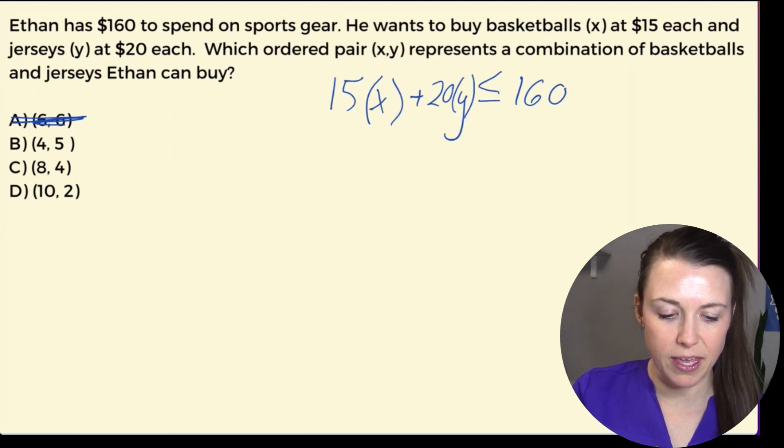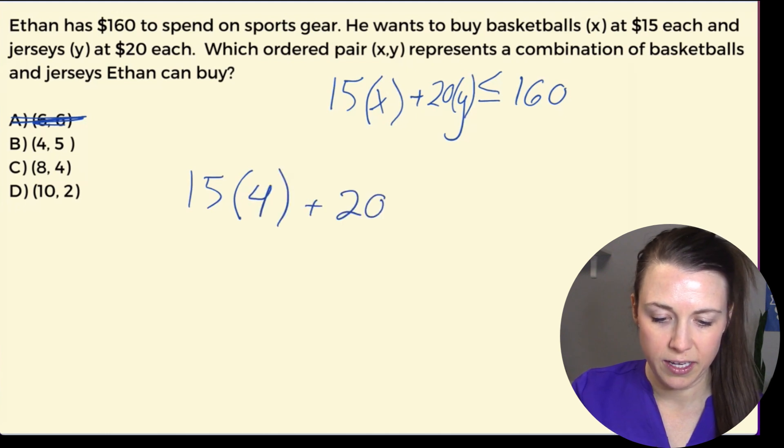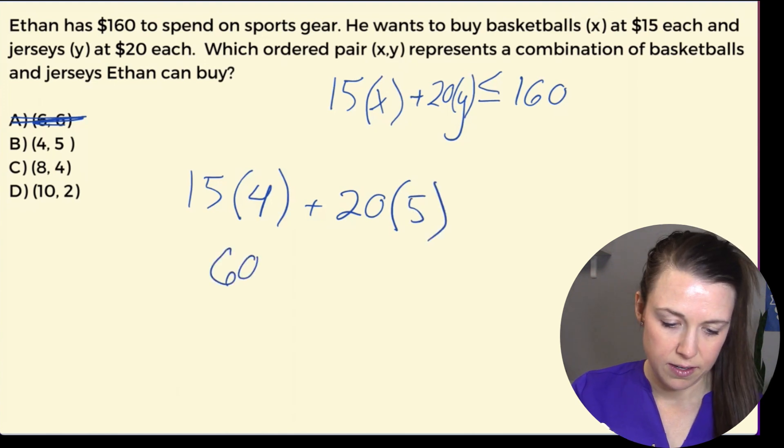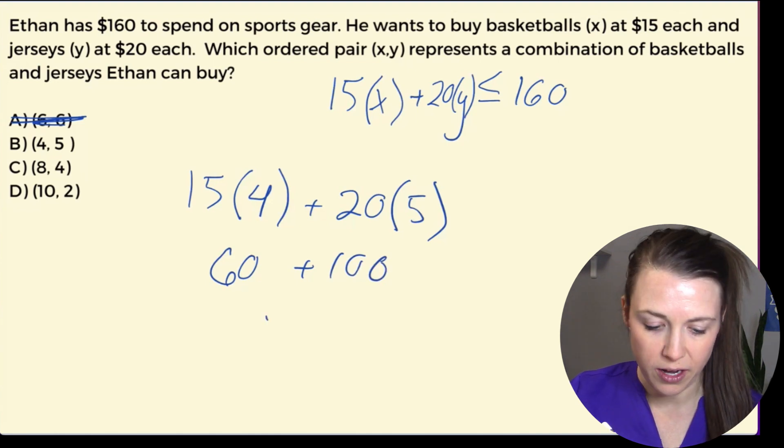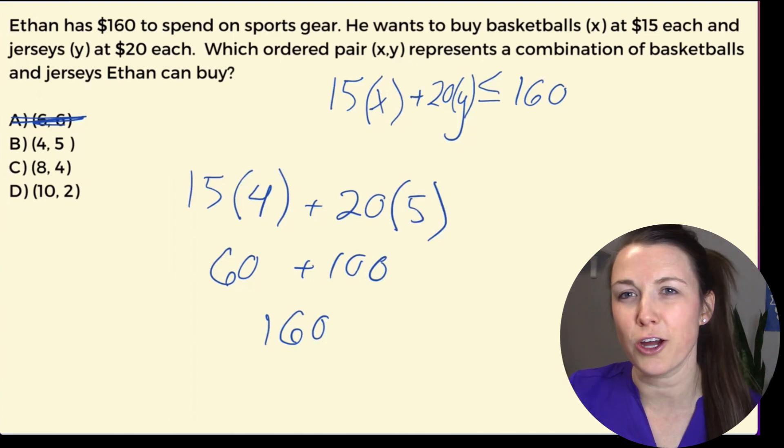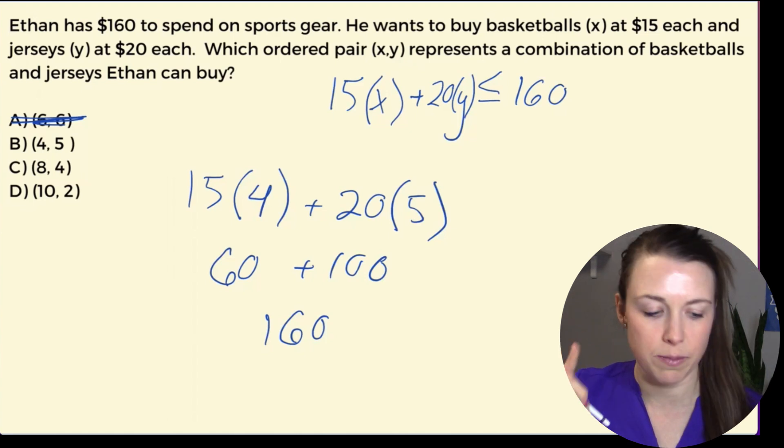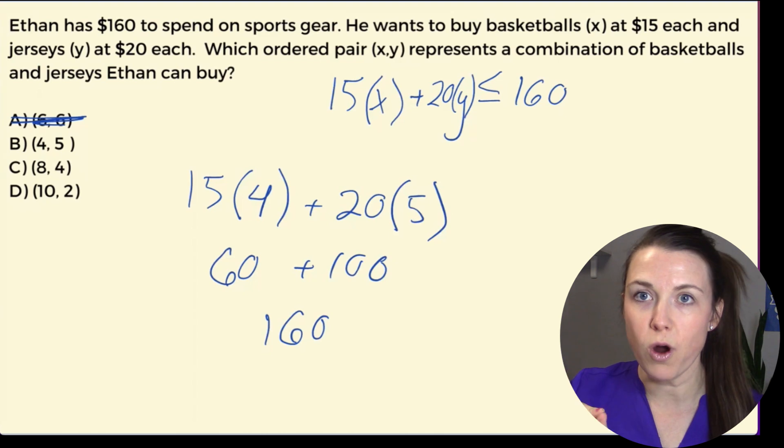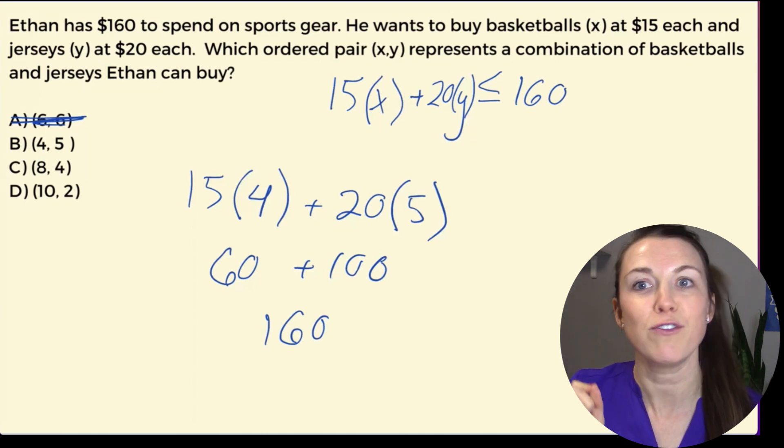So let's try B. We have 15 times 4 plus 20 times 5, and what do we get? 60 plus 100. Oh my goodness, we just hit the jackpot. We get 160. Ethan is right on target buying exactly what he needs to buy with four basketballs and five jerseys.